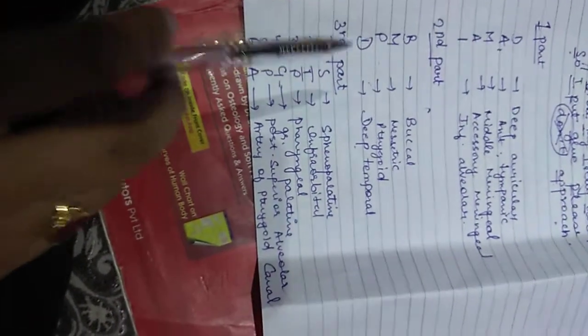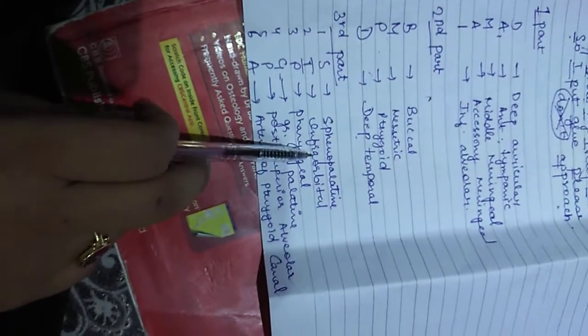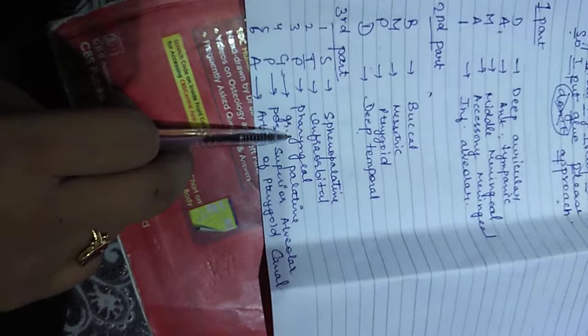In the third part we have S for sphenopalatine, I for infraorbital, P for pharyngeal, G for greater palatine, P for posterior superior alveolar, and A for artery of pterygoid canal.